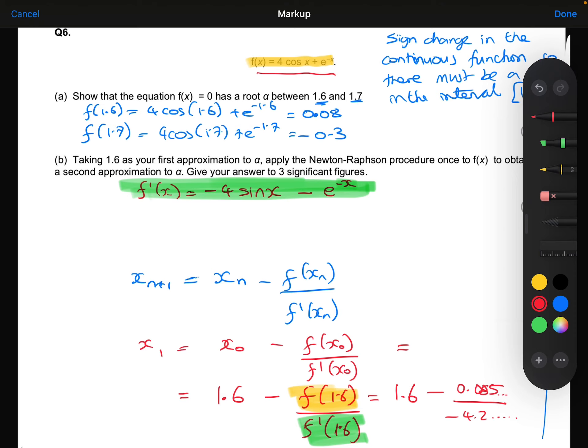Bear with me while I do that. To three significant figures, this gives 1.62.